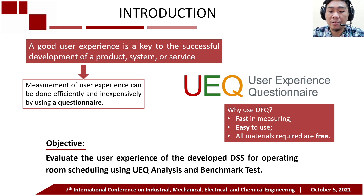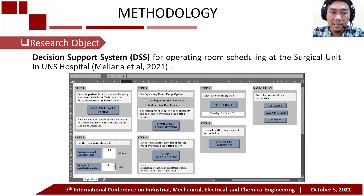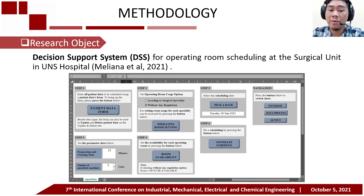The main purpose of this research is evaluating the developed DSS for operating room scheduling by measuring its user experience. In this research, we conduct UEQ analysis and benchmark test for the evaluation result. The object of this research is the decision support system, or DSS, for operating room scheduling at the surgical unit in UNS Hospital. The following is the interface of the DSS. For more information about the DSS, please refer to Meliana et al. 2021.